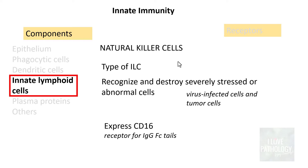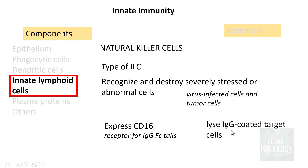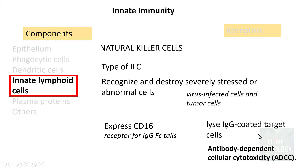Natural killer cells express CD16, which is a receptor for the Fc tail of immunoglobulin G. This means natural killer cells can lyse only those cells which are IgG-coated target cells. This process is referred to as antibody-dependent cellular cytotoxicity. This cytotoxicity is dependent on the antibody immunoglobulin G, and will be discussed further when we cover hypersensitivity reactions.